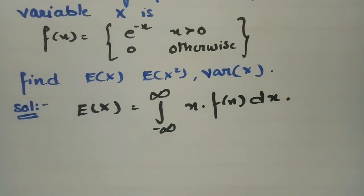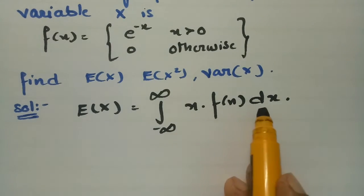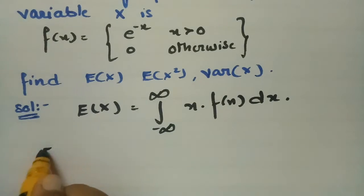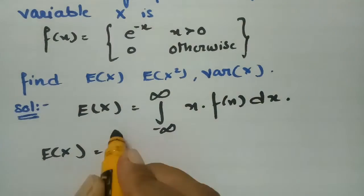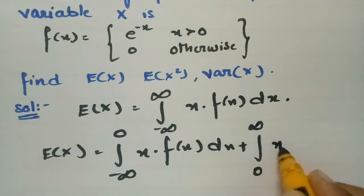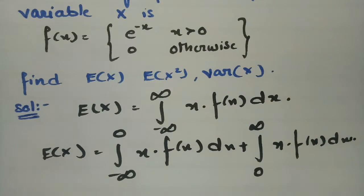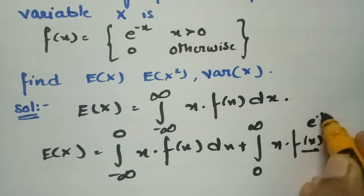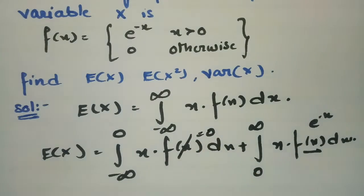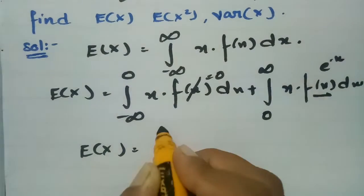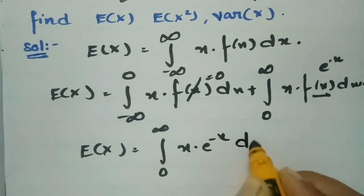E(X) is the expected value, equal to the integral from minus infinity to plus infinity of x times f(x) dx. Inserting 0 as a split point, E(X) equals the integral from minus infinity to 0 of x·f(x) dx plus the integral from 0 to infinity of x·f(x) dx. Since f(x) = e^(-x) for x > 0 and 0 otherwise, this reduces to the integral from 0 to infinity of x·e^(-x) dx.